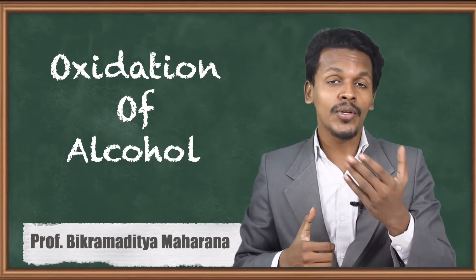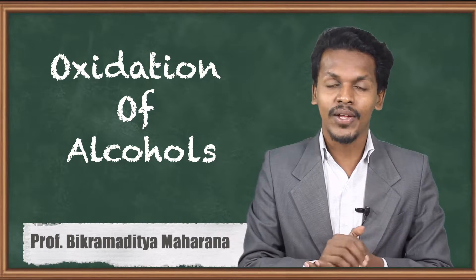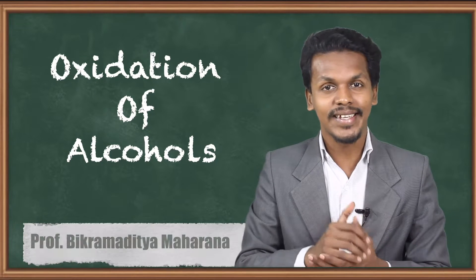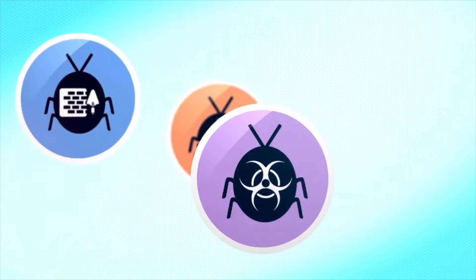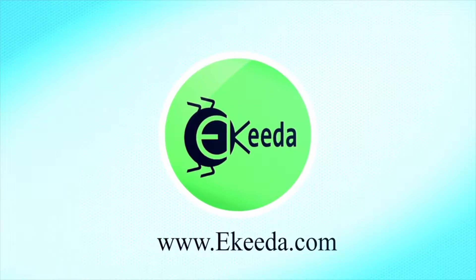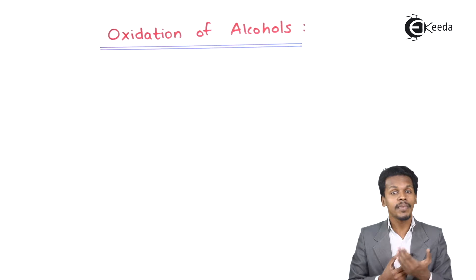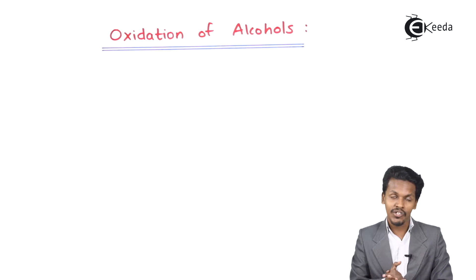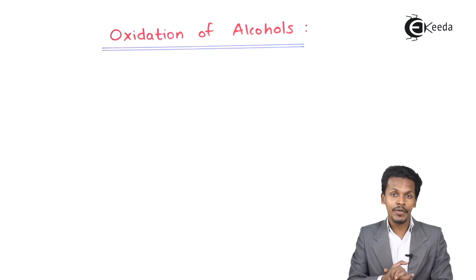Hello friends, in this topic we are going to talk about the chemical properties of alcohol, that is the oxidation of alcohol. We are going to talk about the oxidation of primary alcohol, secondary alcohol, and tertiary alcohol — what reagents are required as oxidizing agents and what products are formed.